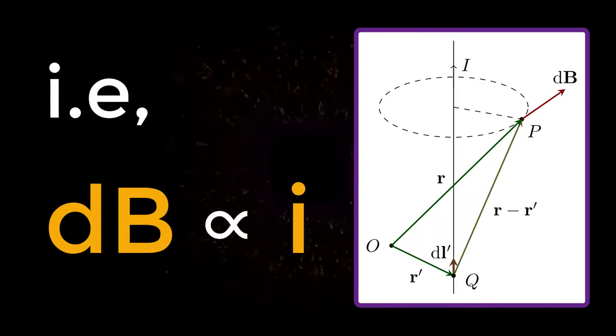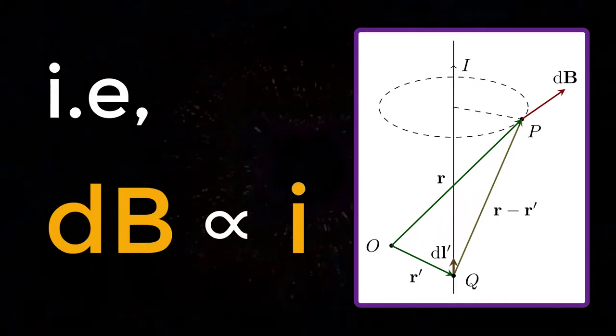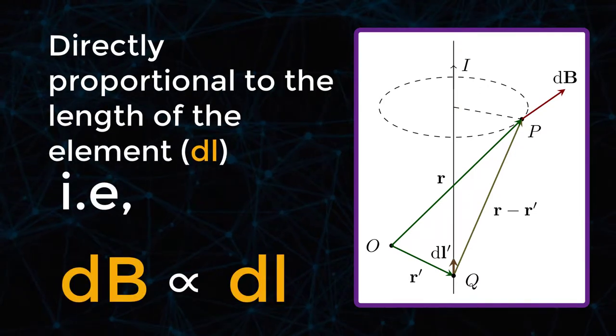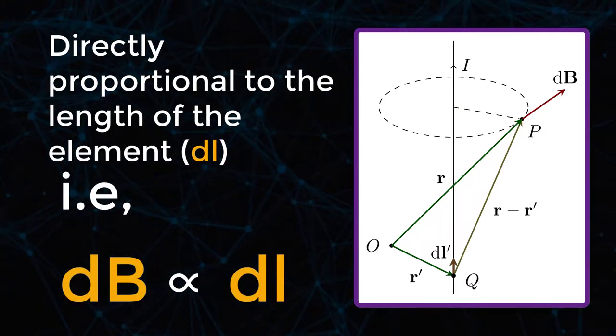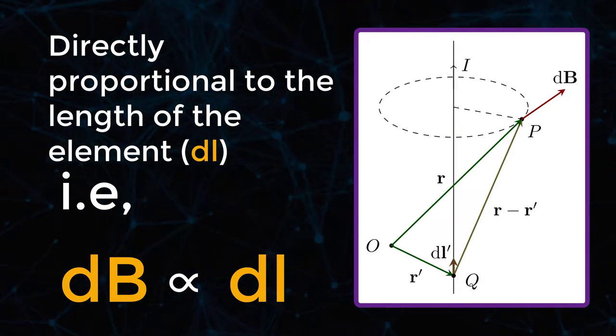That is dB directly proportional to I, directly proportional to the length of the element dl, that is dB directly proportional to dl.